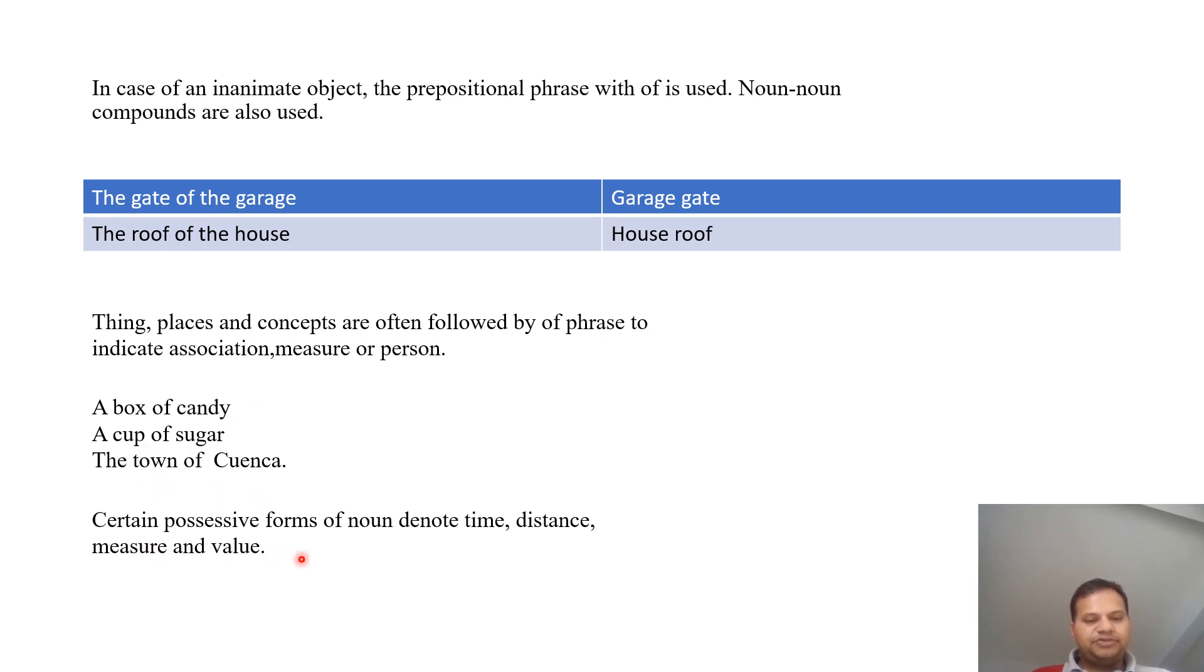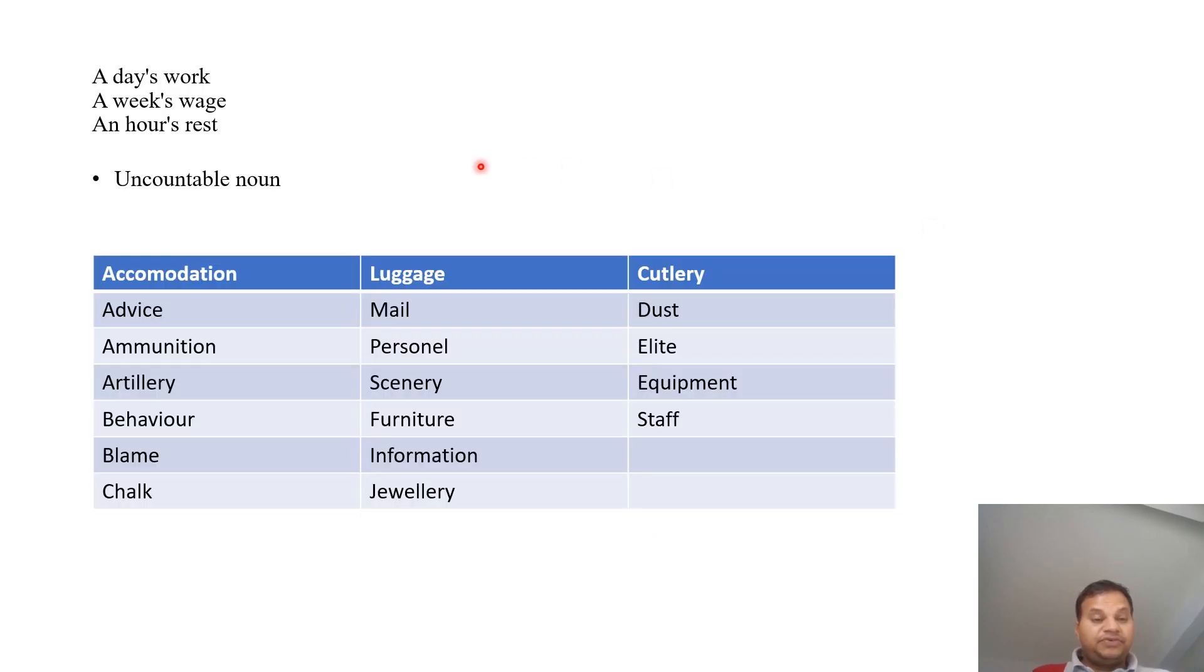Certain possessive forms of noun denote time, distance, measure, and value. For example, a day's work, a week's wage, an hour's rest.